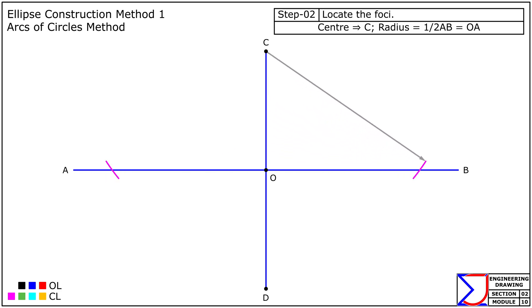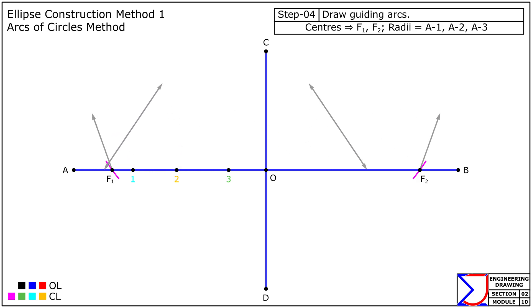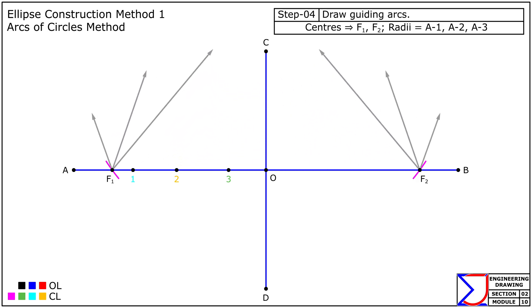Locate the two foci labeled F1 and F2. Then mark several points at convenient, not necessarily equal, intervals along OF1 — for example, three points — and label them accordingly as shown. Now using F1 and F2 as centers, with radii equal to distances A1, A2, A3, draw arcs to provide guides for plotting the final curve.